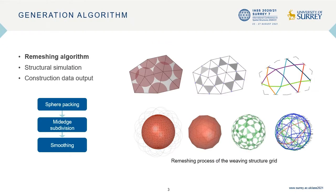To do this, we need a generation algorithm. It mainly consists of three parts. First, we rebuild the basic shape into a triangular mesh with similar edge lengths. The valence of most interior vertices is 5, 6, or 7. There are many ways to get such a mesh and we use the sphere packing method here. Then we do a mid-edge subdivision and only extract the edges of these small triangles. These segments can be joined into polylines. As you can see, there are no singularities in the grid.